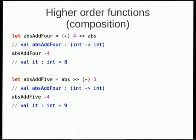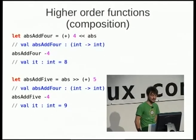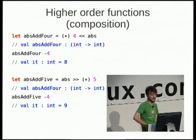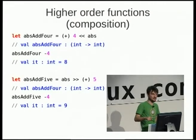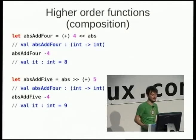We're also able to compose functions. You'd probably write abs and then bracket x plus four. But we can get rid of one of those parameters and just compose the two functions together. We've got a left composition here, so it does abs of plus four. When you give it negative four, it takes the absolute value getting four, then adds four to get eight. And the bottom example with five does a right composition — abs first, then plus five, so negative four becomes four then nine.